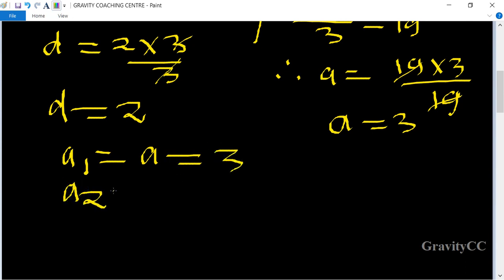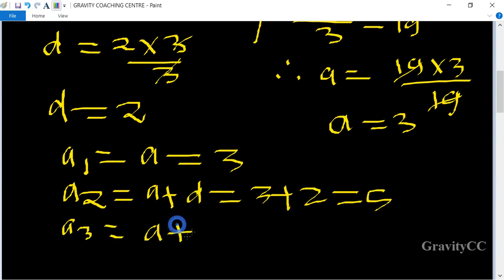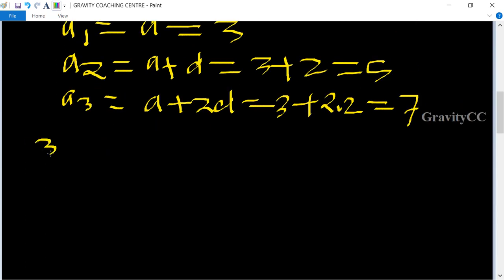The first term equals a equals 3, second term equals a plus d equals 3 plus 2 equals 5, and third term equals a plus 2d equals 3 plus 2 times 2 equals 7. Therefore, the AP is 3, 5, 7, and so on.